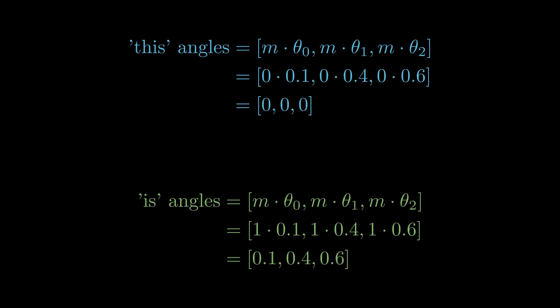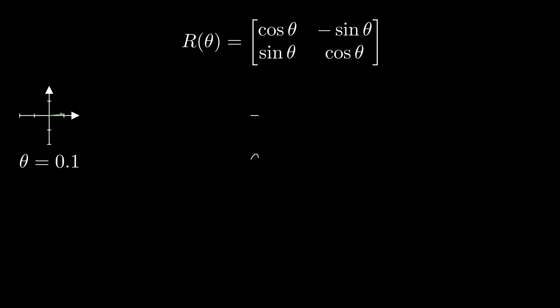For this, all values are 0 as the index of the word is 0. For is, the calculated values are 0.1, 0.4, and 0.6, so the embeddings are rotated by these values.